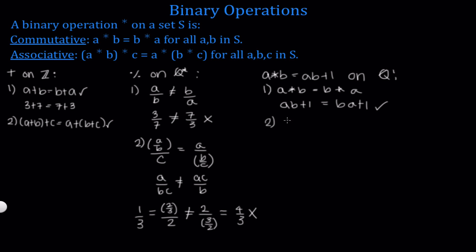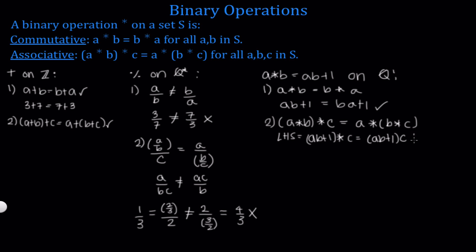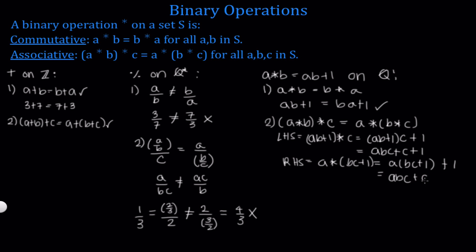Now let's check associativity. We need (A star B) star C to equal A star (B star C). On the left-hand side: (AB plus 1) star C gives (AB plus 1) times C plus 1, which distributes to ABC plus C plus 1. On the right-hand side: A star (BC plus 1) gives A times (BC plus 1) plus 1, which distributes to ABC plus A plus 1. These are not equal unless C equals A, so the left-hand side does not equal the right-hand side.